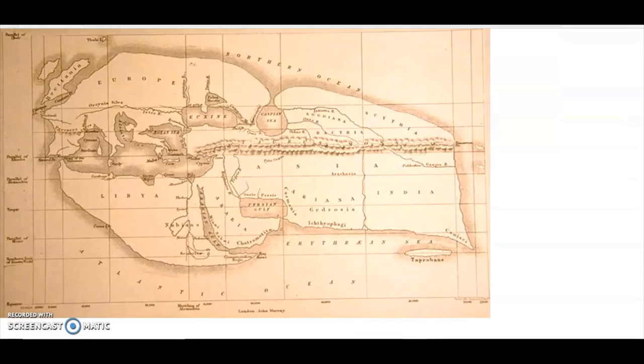This map shows the known world of the time of Eratosthenes. You can see Europe, the Mediterranean Sea, and Northern Africa with Arabia, and the furthest east they'd go is India. So what Eratosthenes did was not really scientific because he didn't know anything about the world that he lived in at the time.